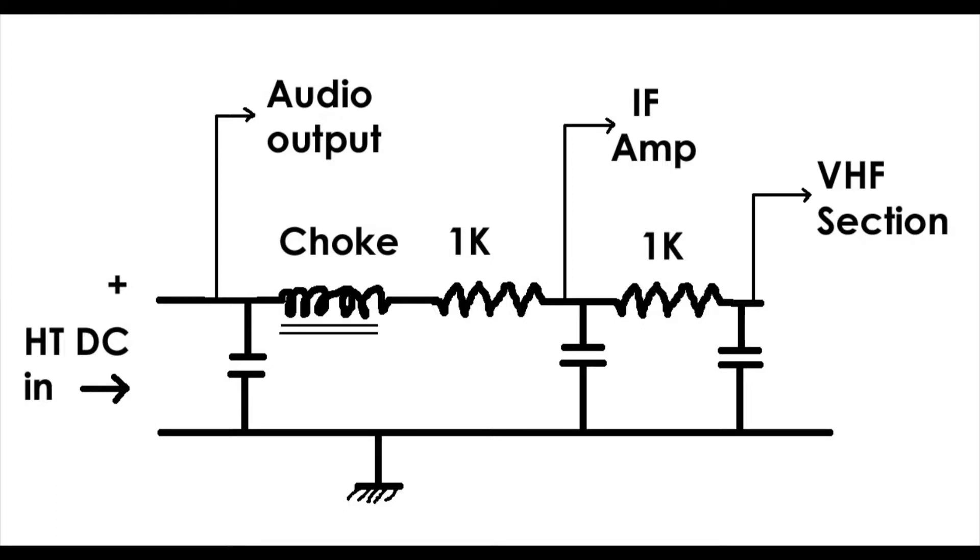From the middle capacitor, the supply is taken via a 1K resistor to the final capacitor. And from there it feeds off to the VHF section. So there's three distinct levels of smoothing that's going on and the more sensitive sections receive the most smoothing.